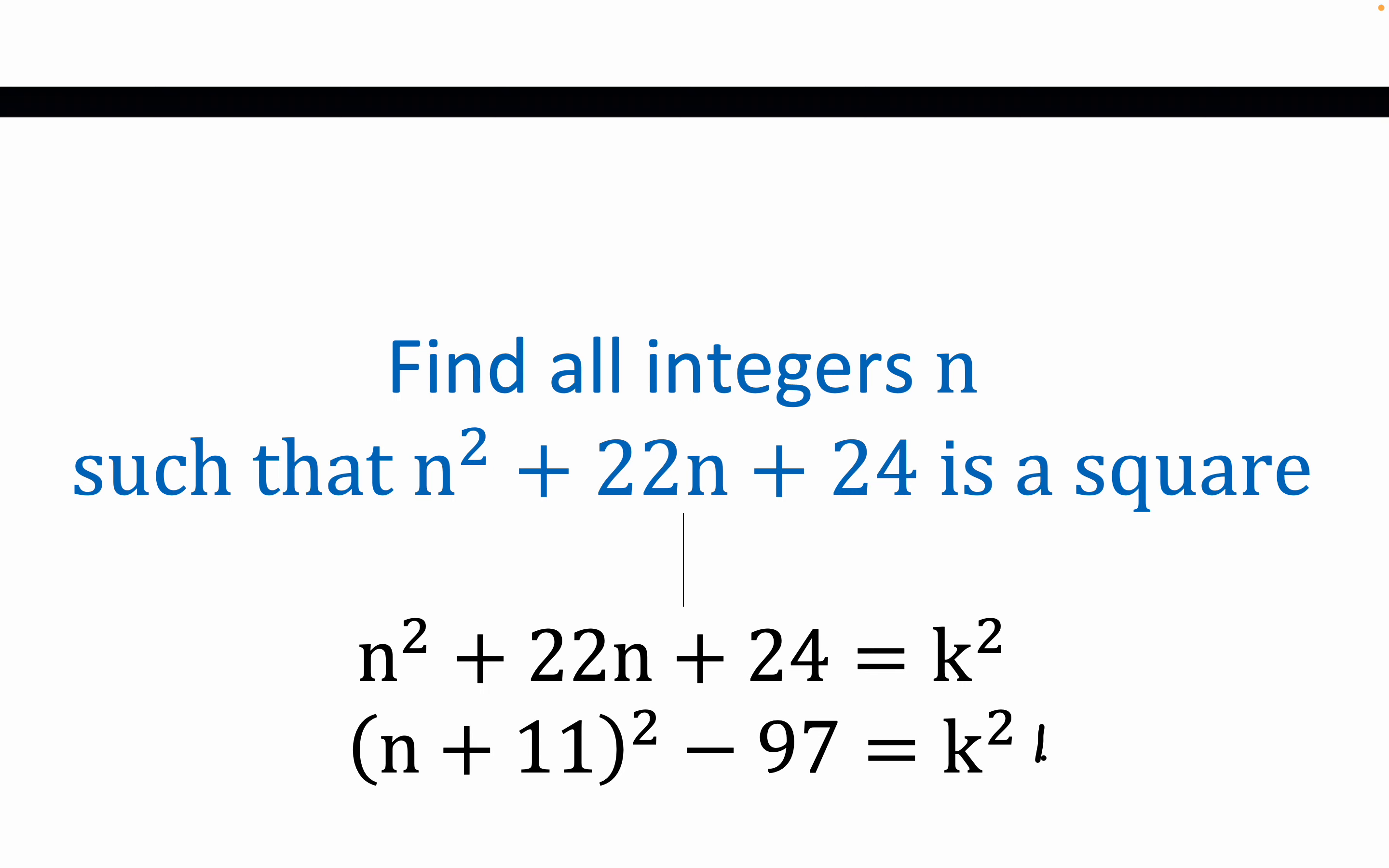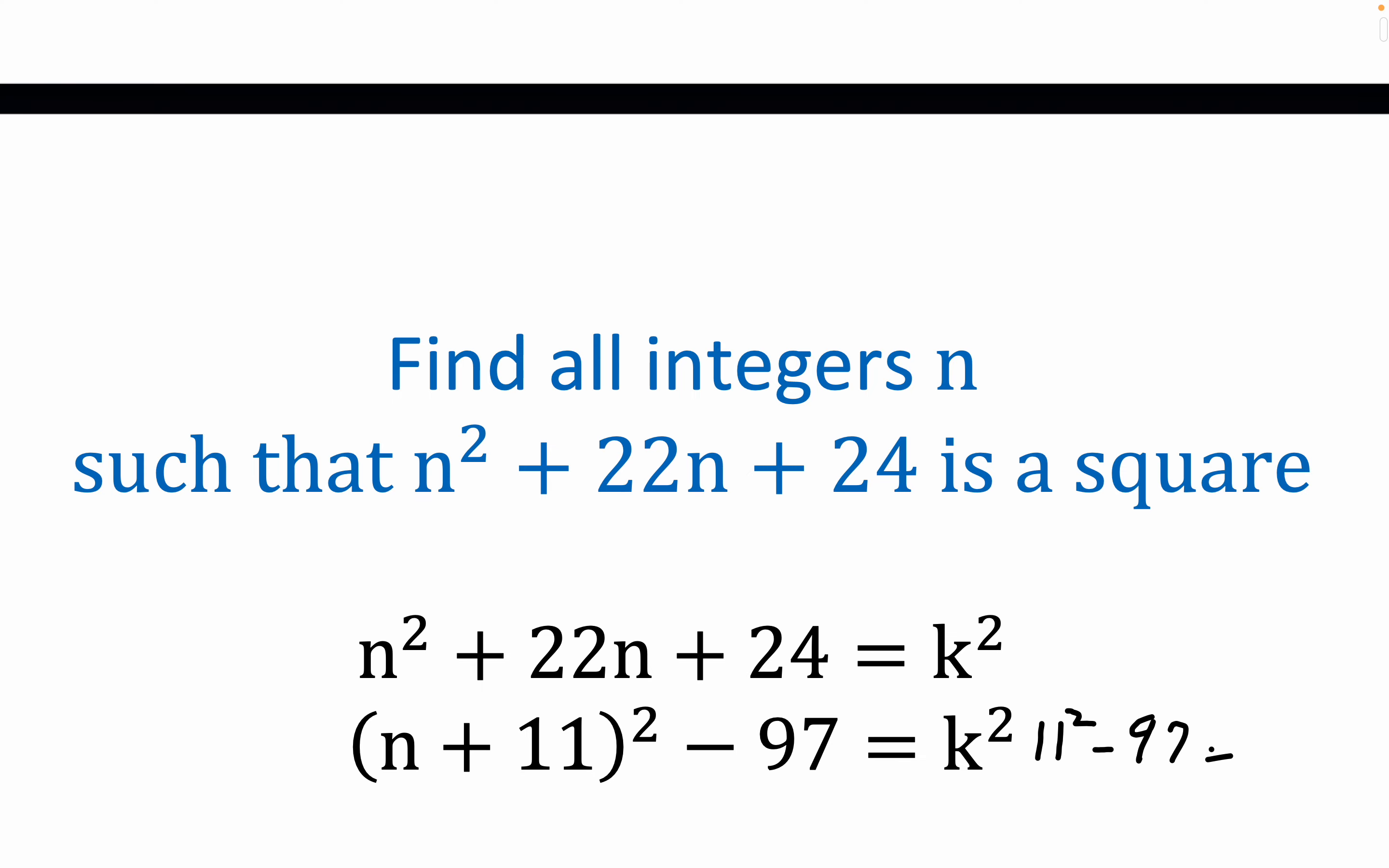This is a fairly common SMO junior level problem. What makes it work is it's more or less just a direct translation. Notice that 11 squared equals 121, and so 11 squared minus 97 is the 24 that you see in the original problem statement.